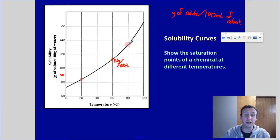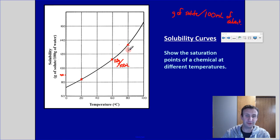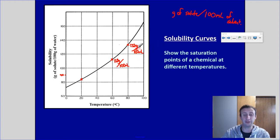Why don't you try this one? How soluble will the solute be at 80 degrees Celsius? If I take a look right there, I've got about just over halfway — there's 130. So let's say around 132 grams per 100 mils of solvent.